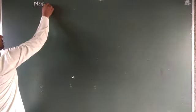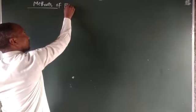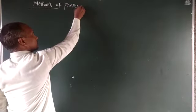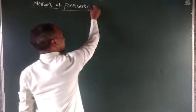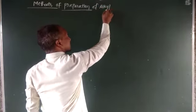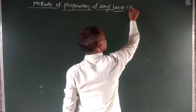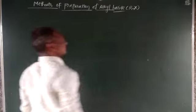Now we will see the methods of preparation of alkyl halides. Alkyl halide is represented as R-X, where X represents the halogen atom.